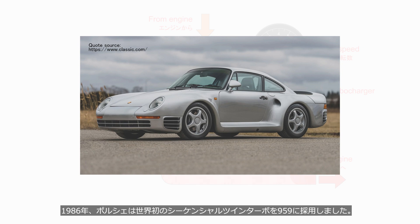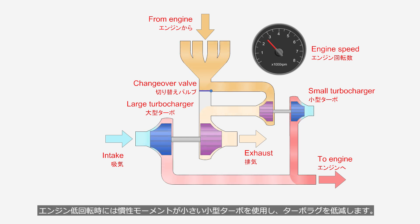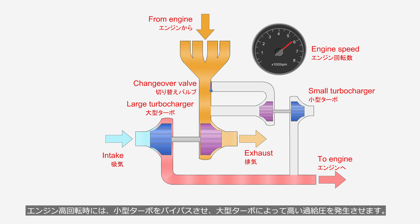In 1986, Porsche adopted the world's first sequential twin-turbo for the 959. Sequential turbo utilizes two turbochargers, which are switched between based on engine speed. During low engine speeds, a small turbocharger with lower inertia moments works to reduce turbo lag. At high engine speeds, the small turbocharger is bypassed and the large turbocharger generates high boost pressure.